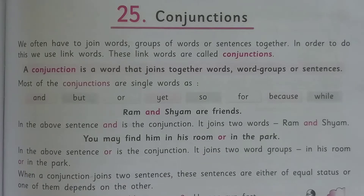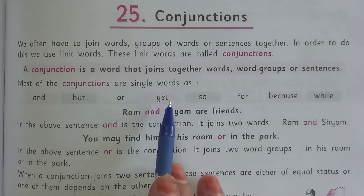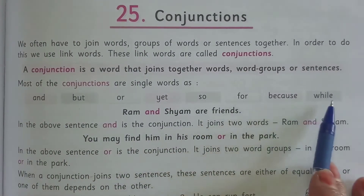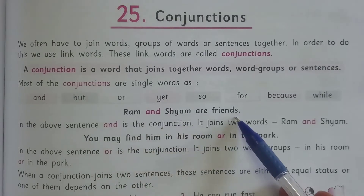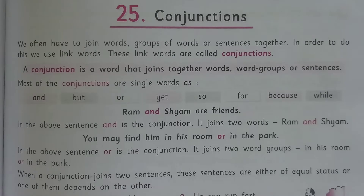So if I ask you to define conjunction: a conjunction is a word that joins together words, word groups, or sentences. Some common conjunctions are: and, but, or, yet, so, for, because, and while. For example: 'Ram and Shyam are friends,' 'Ram is clever but lazy,' 'The car stopped for there was no petrol,' 'He wasn't there on Monday nor on Tuesday.'